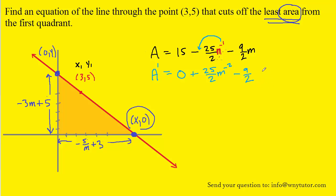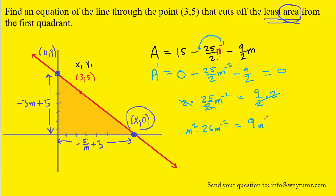We set the derivative equal to 0 and solve for m. Adding 9-halves to the other side, multiplying both sides by 2, and then multiplying both sides by m-squared — which cancels the m to the minus 2 — we get plus or minus 5-thirds. Since m is the slope of the line and the diagram shows the line slopes downward, we reject the positive 5-thirds, leaving us only with negative 5-thirds as our critical number.